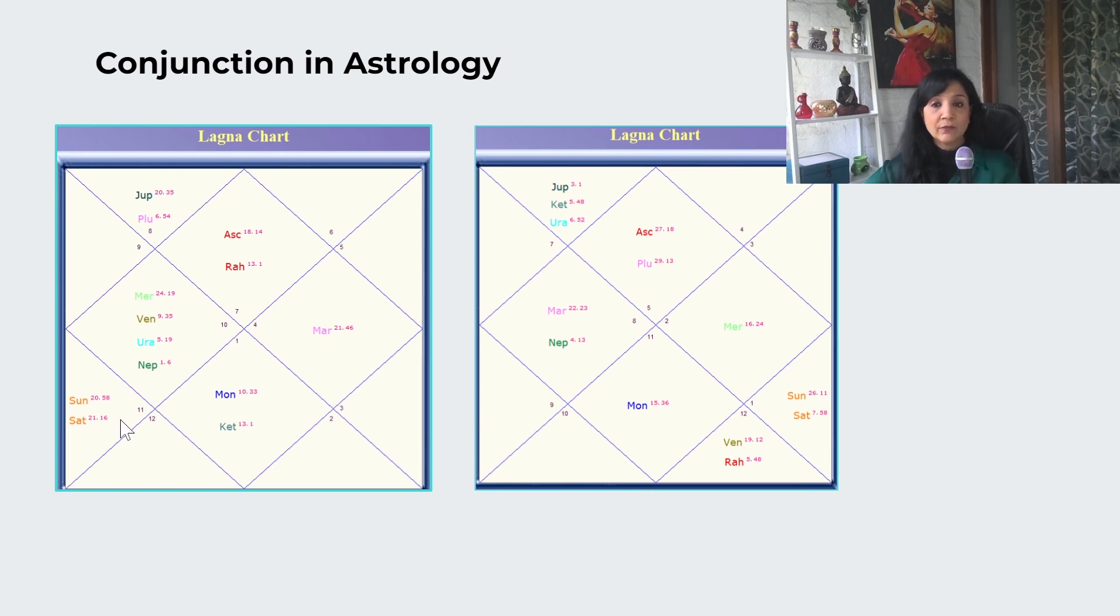If more than two planets, then you should check degrees. Closer degrees will always have more impact. Like if first lord conjunct with seventh lord with close degrees, four to five degree difference, then one can say my partner will have full influence on me. But if more degrees, like around 15 to 20 degree difference between two planets, then the influence or control will be less. More influence versus less influence, but there will be influence, they will share each other's traits. There will be some impact depending on the degree difference.